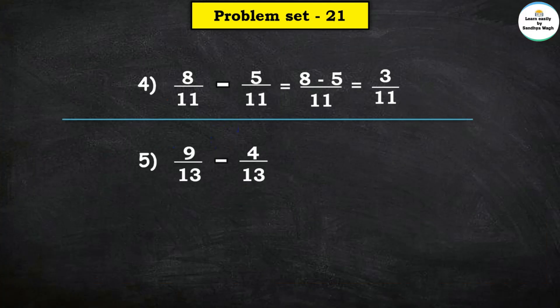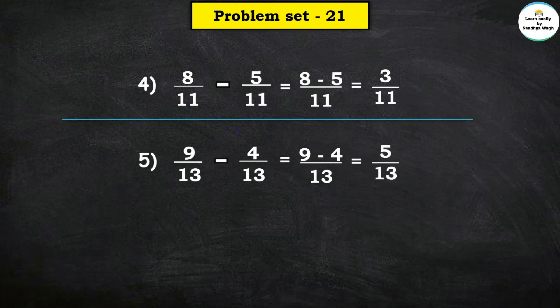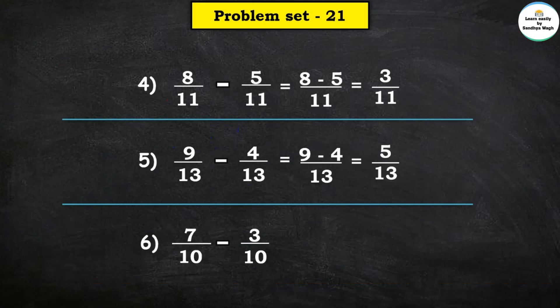Next: 9 upon 13 minus 4 upon 13. The common denominator is 13, so let us write 13 in the denominator's place and subtract the numerators. So 9 minus 4 is equal to 5, and the denominator is 13. Next: 7 upon 10 minus 3 upon 10. The common denominator is 10, so 7 minus 3 is equal to 4. The answer is 4 upon 10.